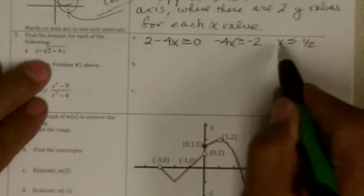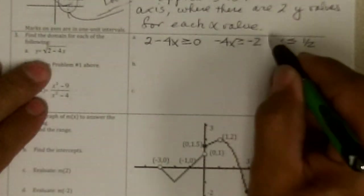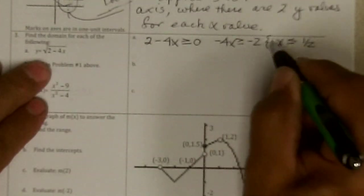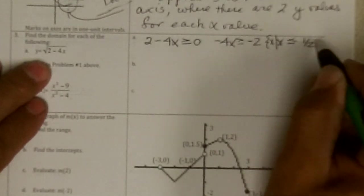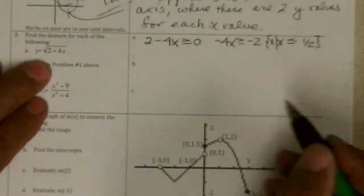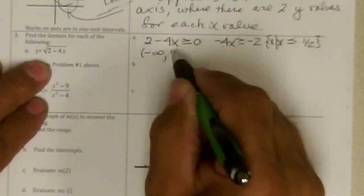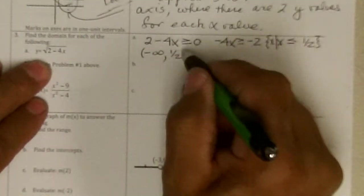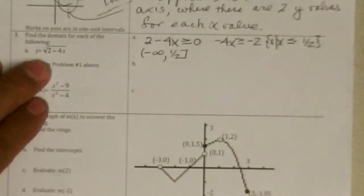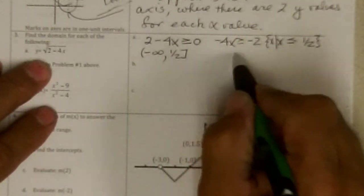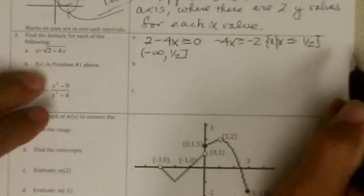So the domain is, can be written in set notation, the set whose elements are all numbers such that the numbers are less than or equal to one-half. Or you could say, on the interval from negative infinity up to one-half, including one-half. Or you could write, all reals less than or equal to one-half.